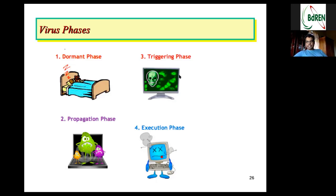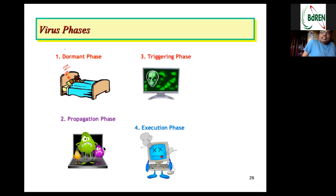After propagation they go into the triggering phase and then the execution phase, where they damage your data or your computer. If you feel there is a virus in your computer — you're noticing that in the triggering or execution phase — you should understand that at that moment the virus has already propagated throughout your file system. No virus as far as I know goes into the execution phase before completing propagation. They do propagation first and then trigger execution.